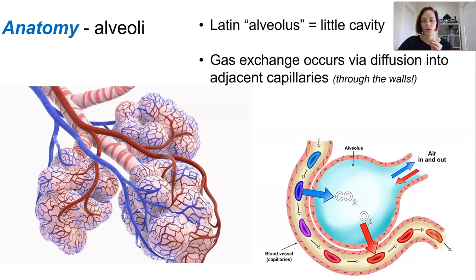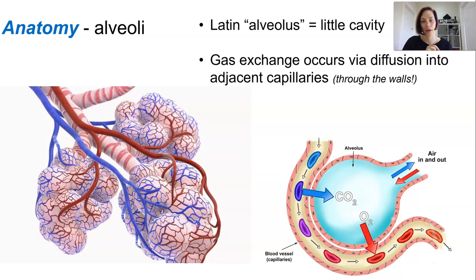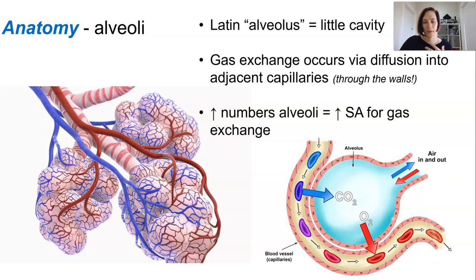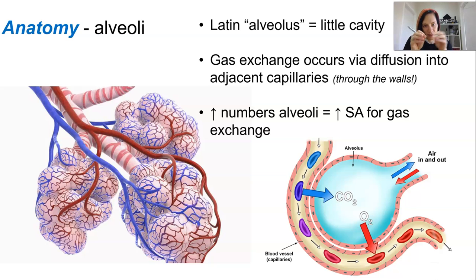Oxygen must diffuse through the thin wall of cells around the alveoli and into the capillary so that it can be picked up by the red blood cells and carried back to the heart and pumped around the body. Carbon dioxide does the reverse journey — it leaves the red blood cells and diffuses into the alveoli so it can be breathed out. The huge number of these chambers means the gas exchange surface area is really large, giving much more surface area than one big chamber like the inside of a balloon.